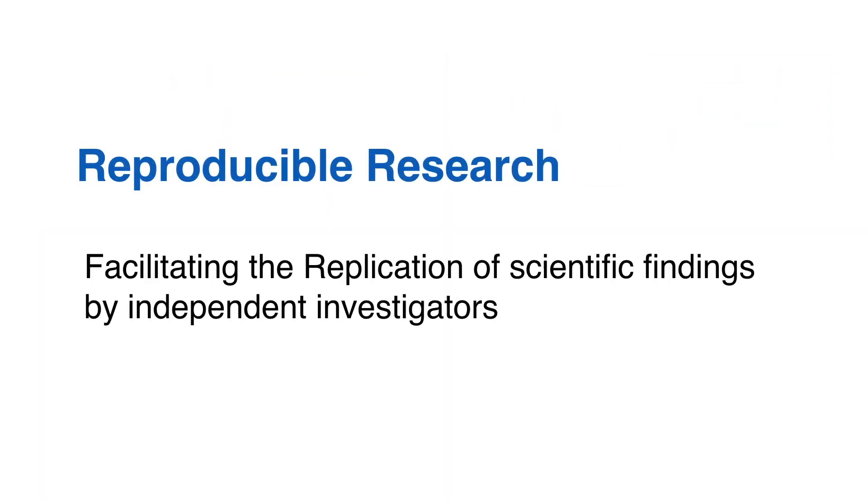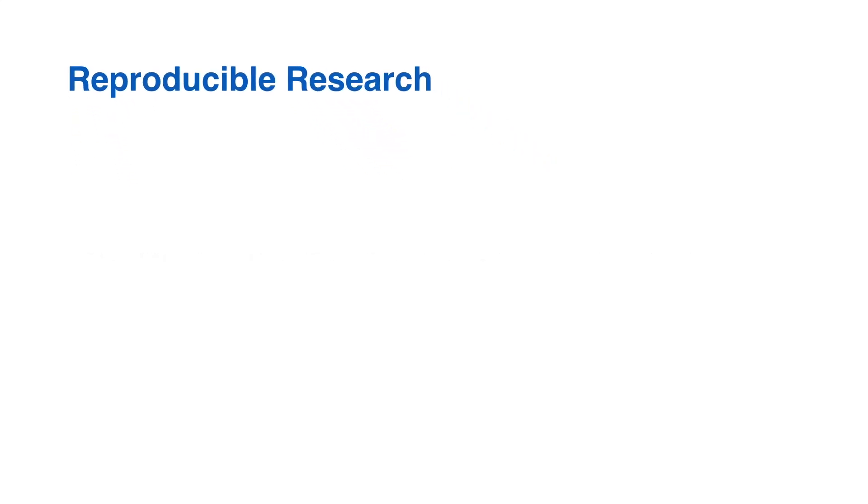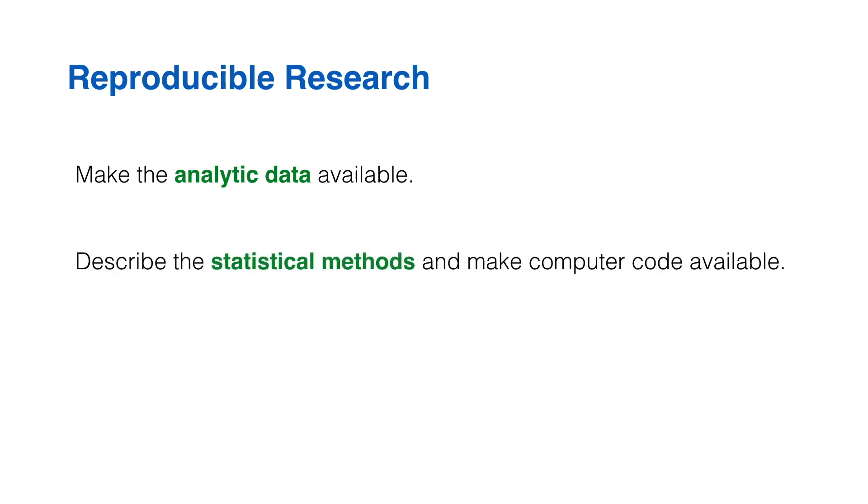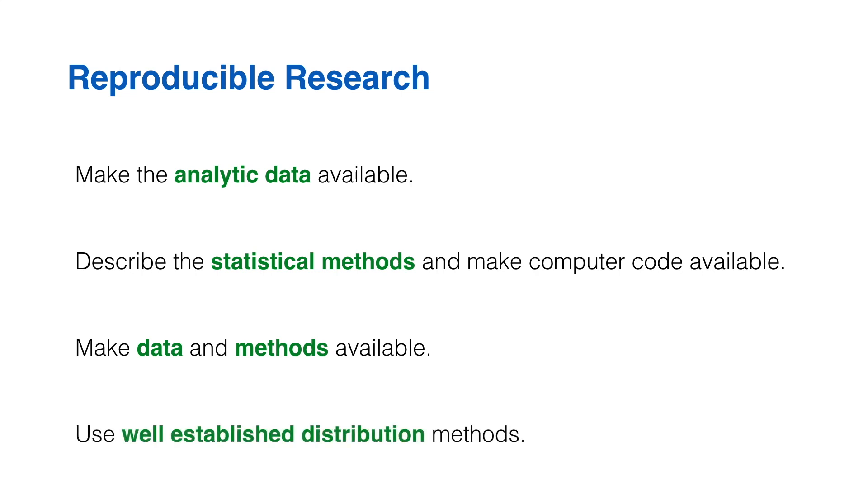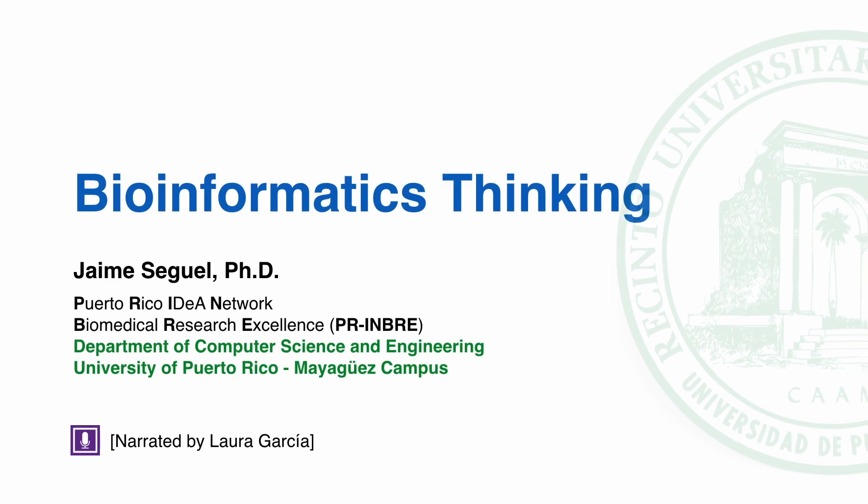Replication by independent investigators using independent methods, data, instruments, and laboratories of scientific findings is the main way to validate them. In order to do that, all data used in the experiment must be made available. Clear and detailed descriptions of the analytical and computational methods used must also be available, along with the methods themselves. Use well-established distribution methods. Bioinformatics is ultimately a collective work, and effective communication is an essential factor in its development and progress.